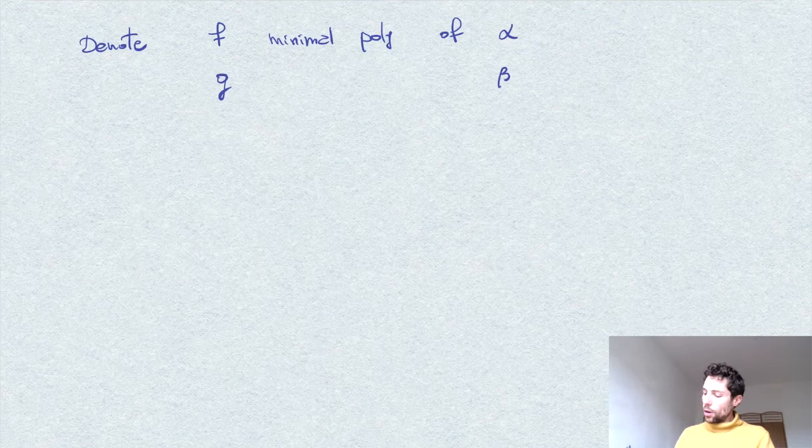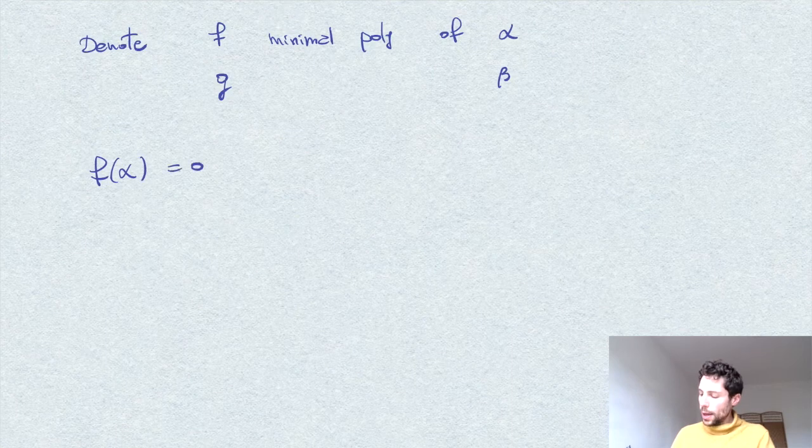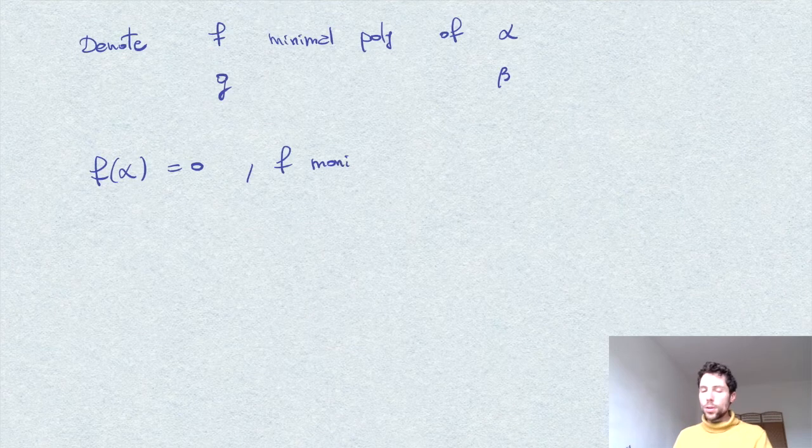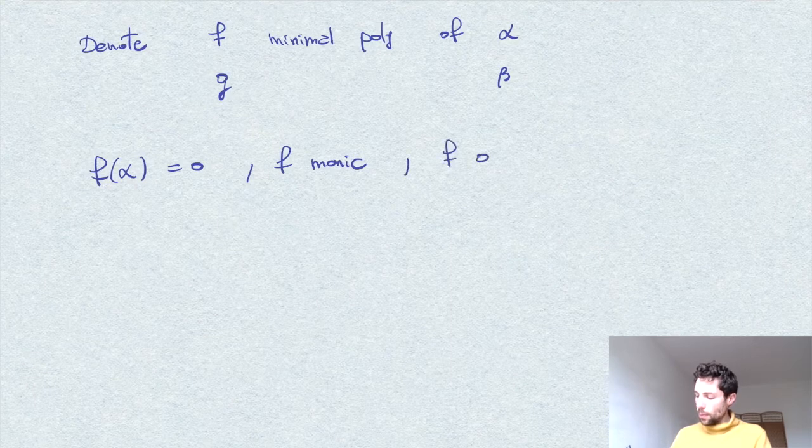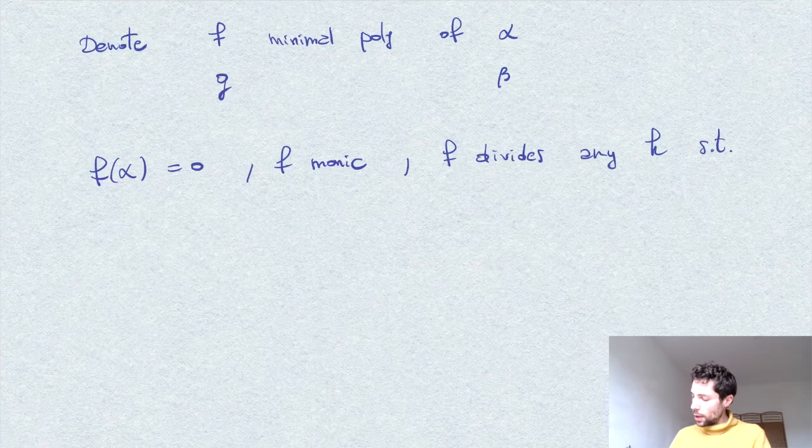Let me recall the basic facts about minimal polynomials. f is the minimal polynomial of α means that α is a root, f is monic (the coefficient of the leading term is 1), and f divides any polynomial h such that α is a root of h.